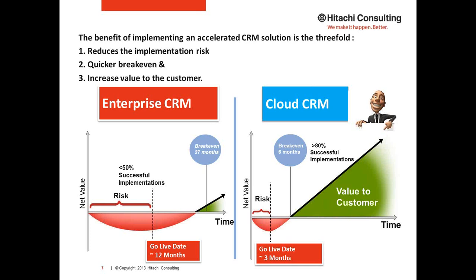Take a look at this slide. On your left is the Enterprise CRM; on your right is the Cloud CRM. In any implementation project, you look at three important things: implementation risk, how quickly you can break even on your investment, and when you start recognizing return on investment. Most enterprise CRM projects take a long time to implement — for a large-scale enterprise, anywhere between 12 to 18 months; for a mid-size enterprise, 6 to 12 months. There was never a time where we talked about going live on a CRM within 3 or 4 months. That's what happens with an Enterprise CRM.